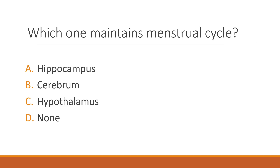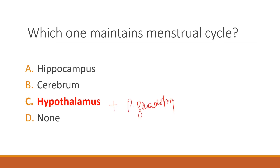Which structure maintains the menstrual cycle? The correct answer is the hypothalamus. The hypothalamus is updated by the pituitary gland through gonadotropin hormones — specifically follicle-stimulating hormone (FSH) and luteinizing hormone (LH).